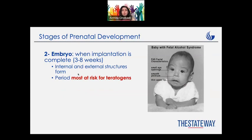Then we have the embryo, which means implantation is complete, and it can be any time after 3 weeks until 8 weeks. This is the most sensitive period for the fetus because the baby is really at risk of pathogens. If mom would have any sort of alcohol or be exposed to any sort of pathogens, the baby would have a problem — like a 95% chance the baby might have some sort of disabilities.